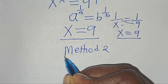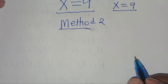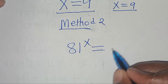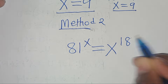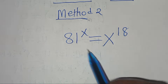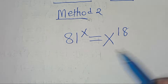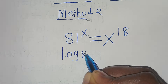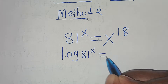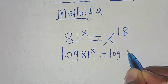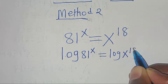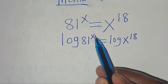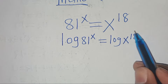Let's check with method 2 here. We have 81 raised to the power of x, this is equal to x to the power of 18. Now to solve for x here, we introduce logarithm on both sides so that we have log of 81 to the power of x, this is equal to log of x to the power of 18.